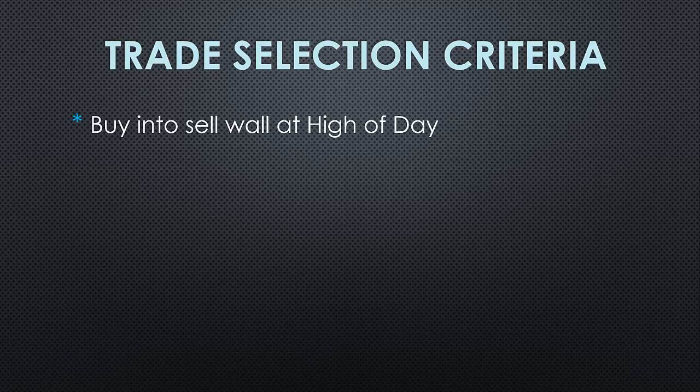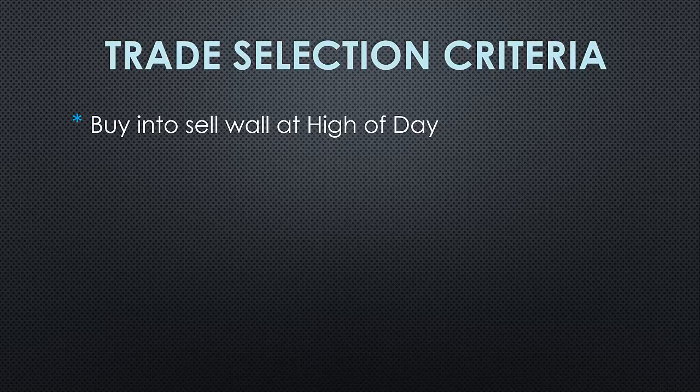Rule one is really about momentum. When you're getting long, you want to be buying into a sell wall when the stock is trading at its highs. Vice versa, when you're short selling, you want to be selling into a bid wall when the stock is trading at its lows. To assist in scanning for stocks where this setup is in play, you can set up a Spark smart list to scan for stocks trading at their highs or lows.